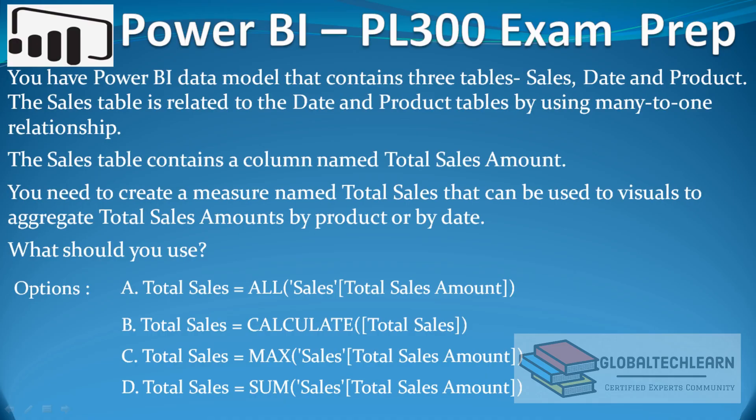Now we have the data ready. Coming back to the question — we need to create a measure named Total Sales that can be used in visuals to aggregate Total Sales Amount by product or by date. To create this measure we have four options. Option A is Total Sales = ALL(Sales[Total Sales Amount]) — this has no SUM function applied, so it will not work. Option B uses CALCULATE but also has no SUM, so it will not calculate the sum of Total Sales either.